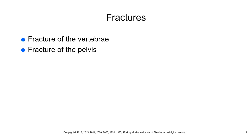Pelvic fractures are most commonly due to trauma such as a fall, car accident, or crushing accident. Keep in mind that vital abdominal organs in and around the pelvic region can be injured, including the bladder, vagina, uterus, liver, spleen, intestines, and kidneys. The pelvis has a very rich blood supply, so extensive blood loss is possible.